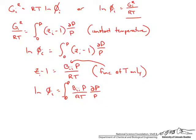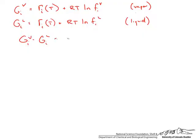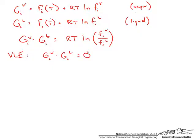Why we care about this in terms of equilibrium: writing the Gibbs energy of the vapor of species i relates it to the fugacity of that species in the vapor phase. Doing the same for the liquid phase uses the fugacity of species i in the liquid phase. Subtracting these two Gibbs energy expressions, at vapor-liquid equilibrium the left side equals zero. At the saturation pressure, this means the fugacity of the species in the vapor phase must equal the fugacity in the liquid phase — called the saturation fugacity for species i.